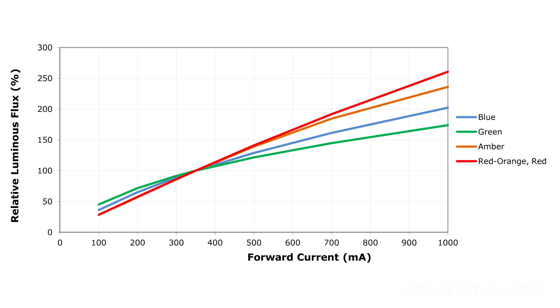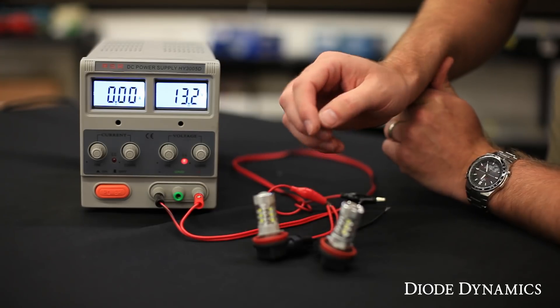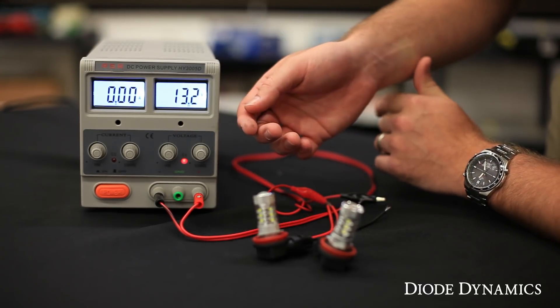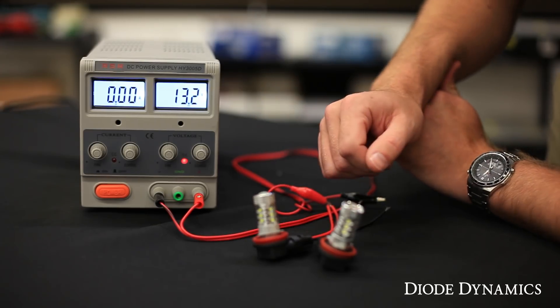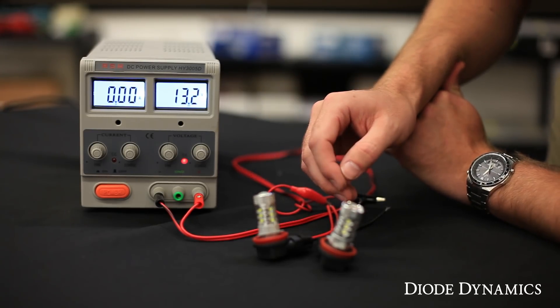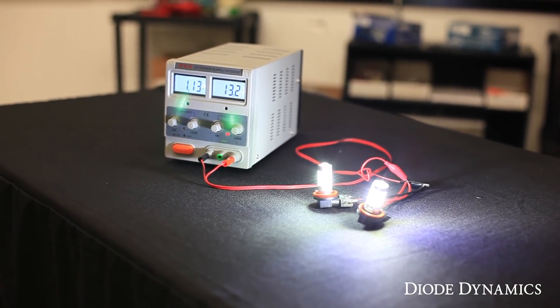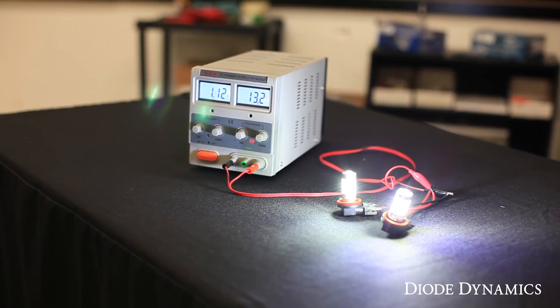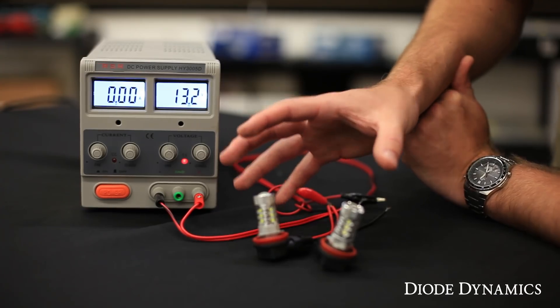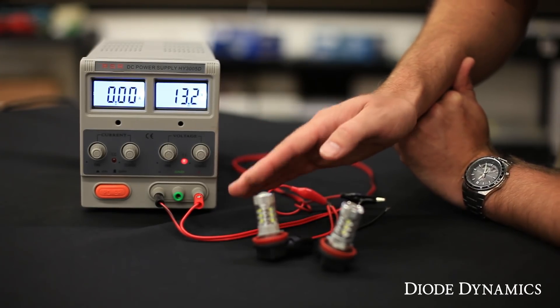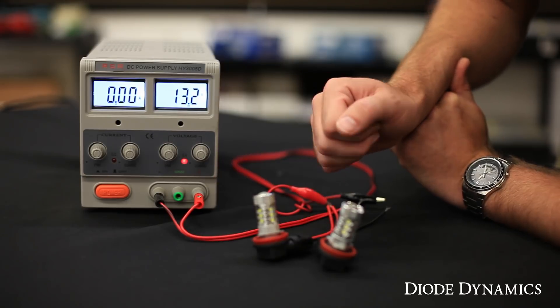So the higher the current, the more brightness. The problem is, the higher the current, the more heat is generated as well. The bulb has to be designed in order to dissipate that heat efficiently while still maintaining high levels of power to maintain high levels of brightness. All LEDs are going to decrease in brightness a little bit as they heat up, but we want to minimize that as much as we can.